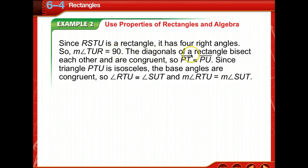The diagonals of a rectangle bisect each other and are congruent, so PT is congruent to PU. Since triangle PTU is isosceles, the base angles are congruent. Therefore, angle RTU is congruent to angle SUT, and the measurement of angle RTU equals the measurement of angle SUT.